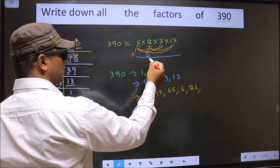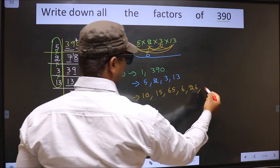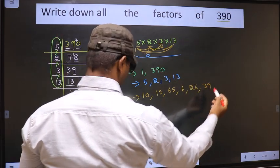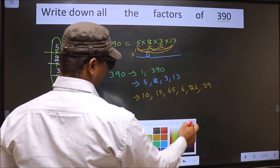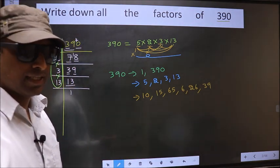Now you leave 2, fix 3. Combine with 13. 3 into 13, 39. No other combination possible.